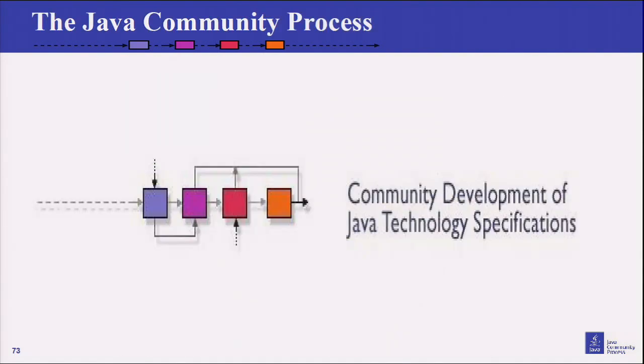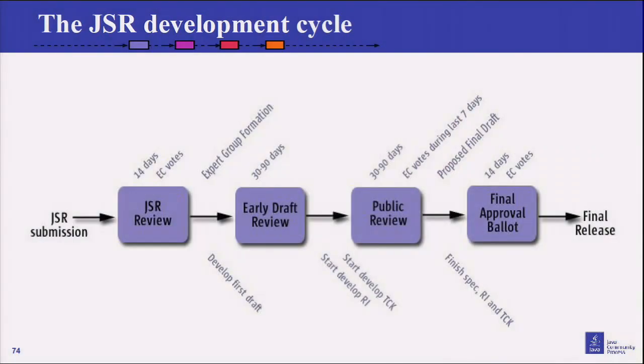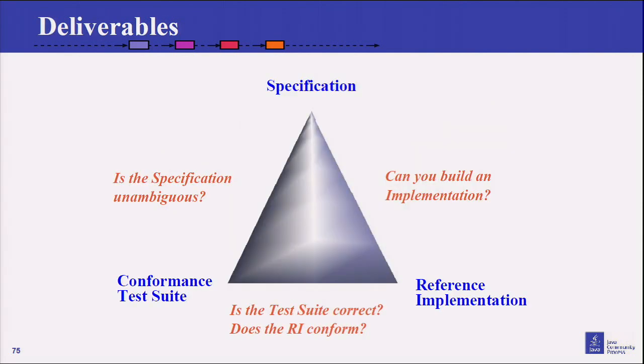In the Java world, JCP is the way we do this. As I said, I'm talking this afternoon and I'll give you more details. But basically it's a formal process for defining specifications and moving them through the process — voting on them, reviewing them at various stages. Three deliverables: not just a specification, but also a reference implementation, which is proof that you can actually build to the specification, and a conformance test suite to make sure implementations actually conform to the spec. You've got to create all three simultaneously — they all support each other like three legs of a stool.